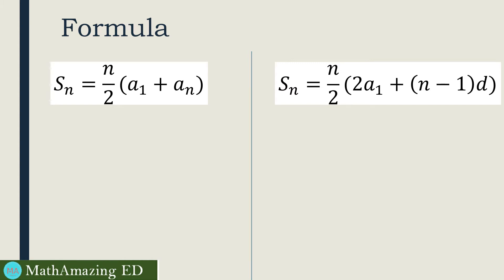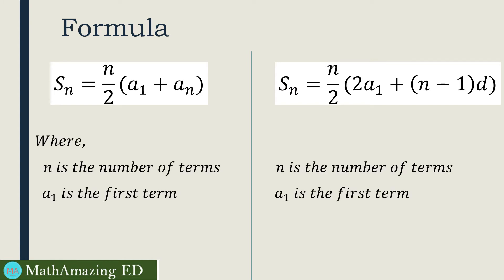The sum of an arithmetic sequence comes with two formulas. The first one is where n, a sub 1, and a sub n are given. n is the number of terms, a sub 1 is the first term, and a sub n is our nth term, or the last term itself. The second formula has the same given values: we have n and a sub 1, but the other given value is d, or the common difference.